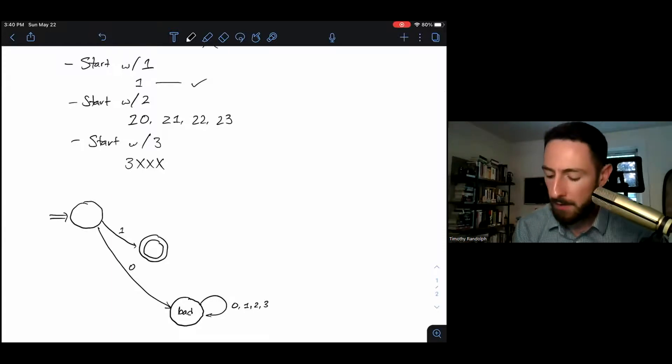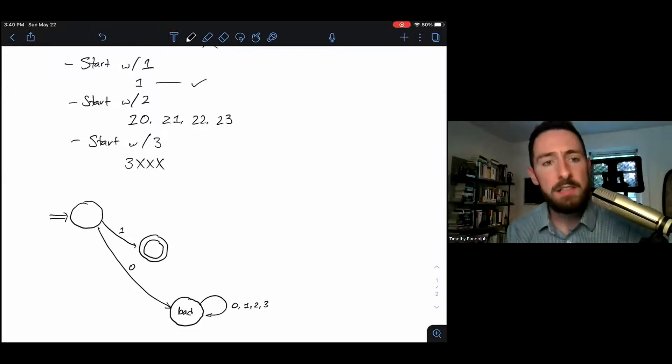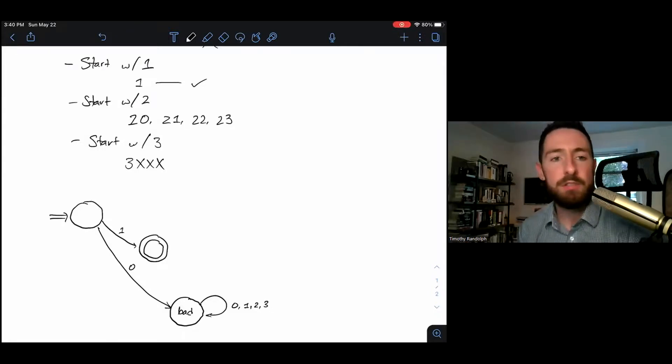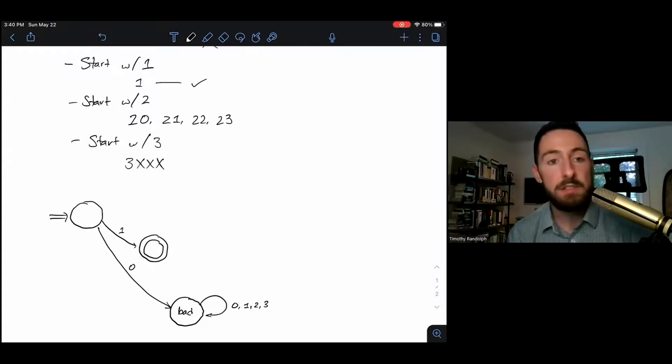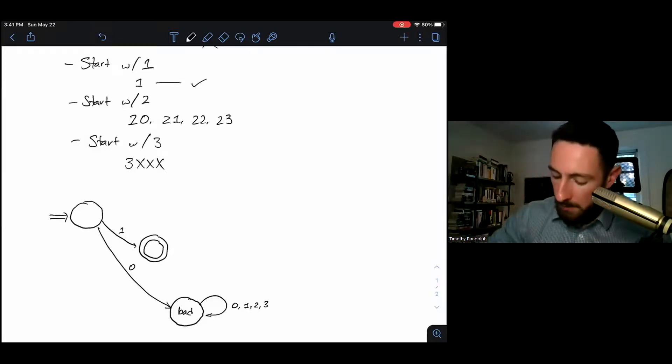When I'm looking at transitions out of this state, I think, all right, if I see any other characters after I've seen a one, then I'm going to want to reject. If I see 1-0 or 1-1 or anything else, that's a string that starts with a one and is more than one character. So anything else from here, we're going right into the garbage.